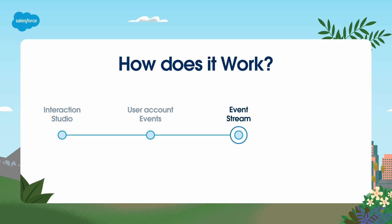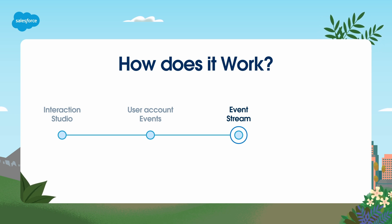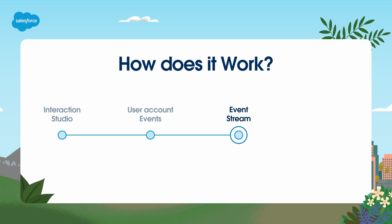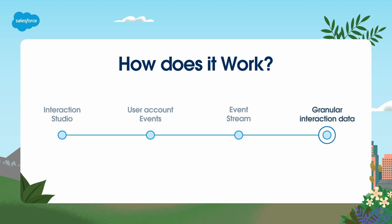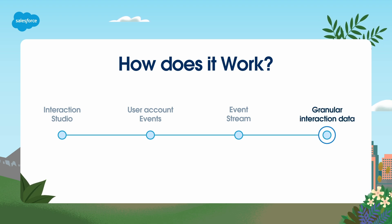You can observe these events on a left-hand drop-down menu by clicking on the selection Event Stream. Event Stream shows every interaction that's been taken.